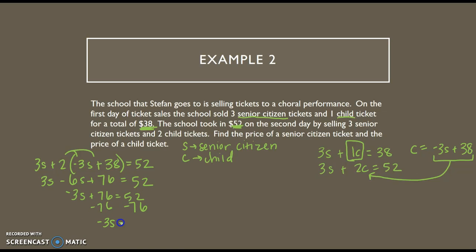So I get negative 3s equals negative 24. And then divide by negative 3. So negative 24 divided by negative 3 gives me a positive 8. So that means that the senior tickets were $8 each.